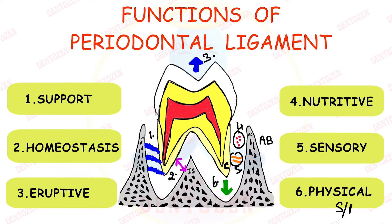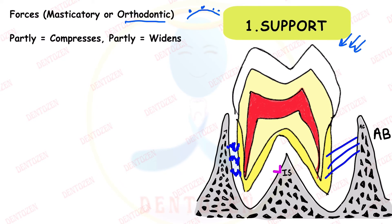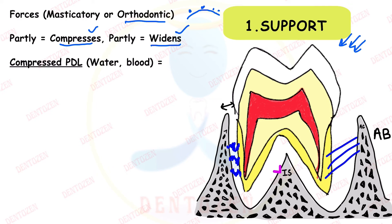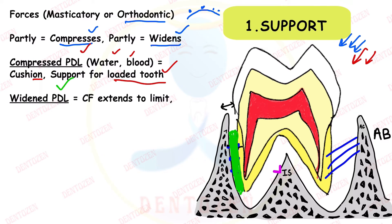The first function is support. Whenever masticatory load or orthodontic forces are present — for example when braces are put on teeth to straighten them — a part of the PDL will compress whereas another part will widen. In the compressed part, the fibers, water molecules, and blood vessels all act as a cushion for the loaded tooth, providing support to the tooth under pressure.